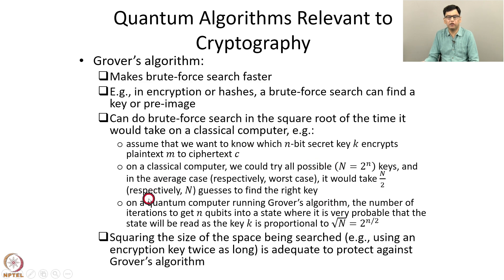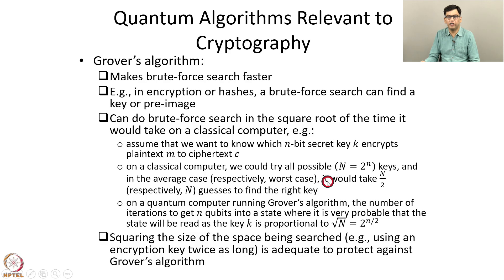It is not difficult to counter Grover's algorithm. If we just square the size of the space being searched — for example, using an encryption key twice as long — so instead of a key that is n bits in length, we use a key that is 2n bits in length. That will square the size of the space being searched, because the number of possible keys would be 2 to the power 2n, which is 2 to the power n squared. Squaring the size of the space being searched is adequate to protect against Grover's algorithm. The complexity of encryption and decryption will increase, but that is the cost we have to pay for better security.